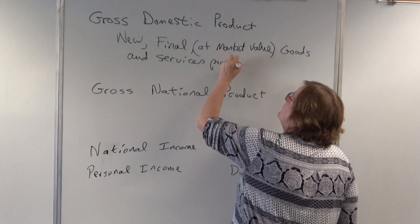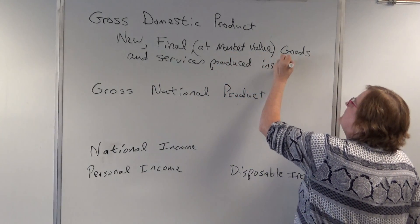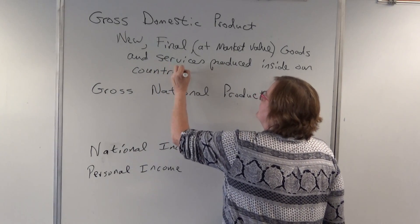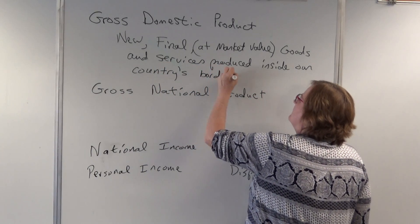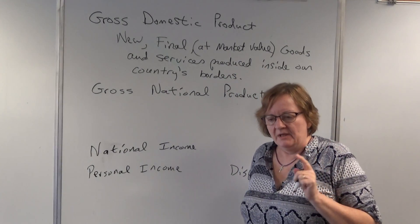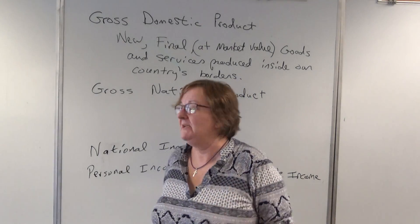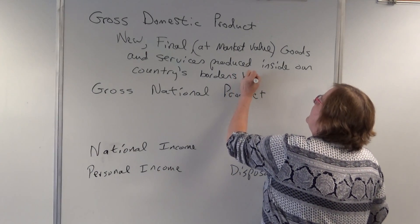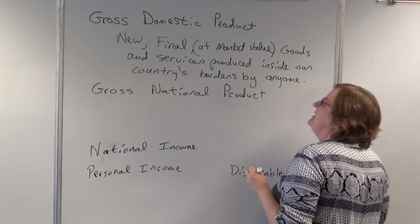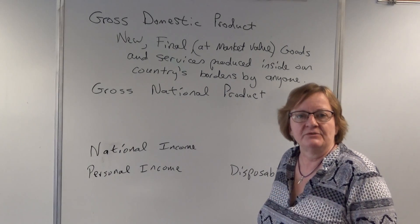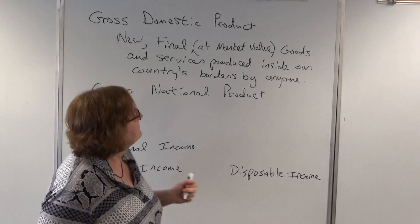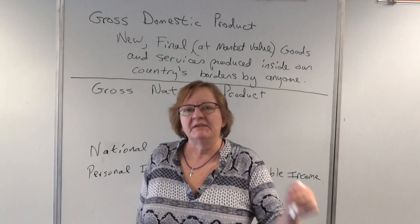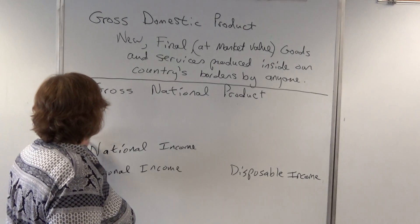GDP measures new final goods and services produced inside our country's borders — so if you're in France, it's everything produced inside France's borders. And it's produced by anyone. It doesn't have to be nationals of our country. So if a Toyota is made in a factory in Tennessee, it counts as part of our GDP. We used to measure gross national product instead.